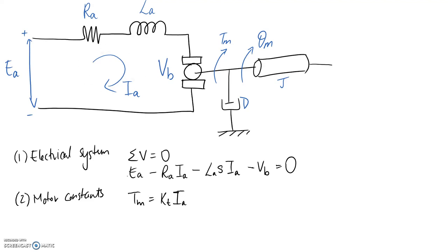So to be able to substitute this back up into the other equation, we're going to need to rearrange it in terms of Ia. So that becomes Tm on Kt.